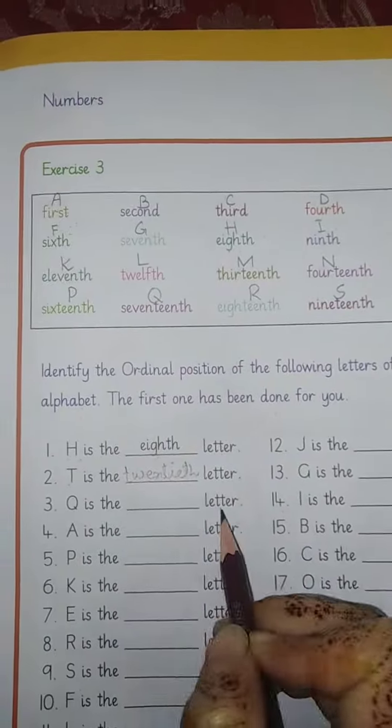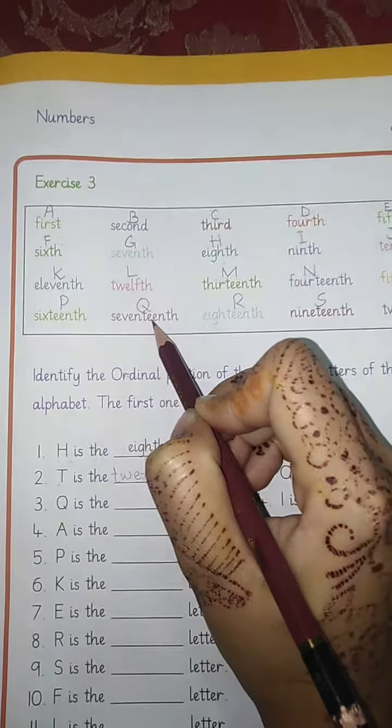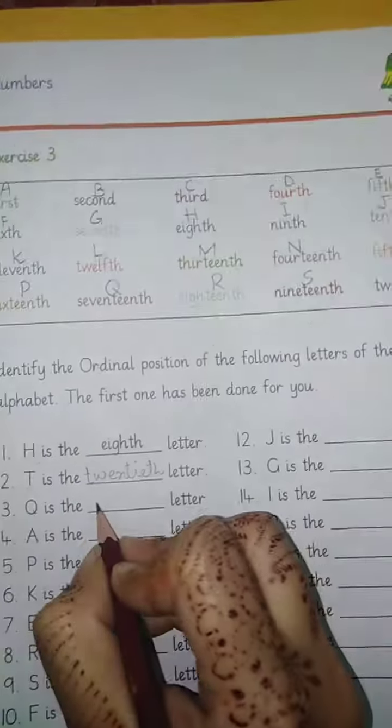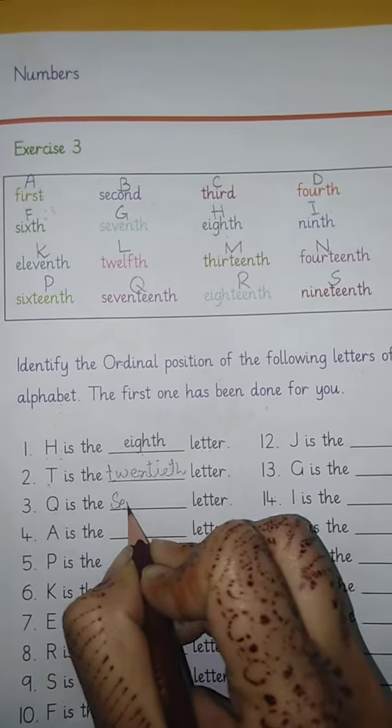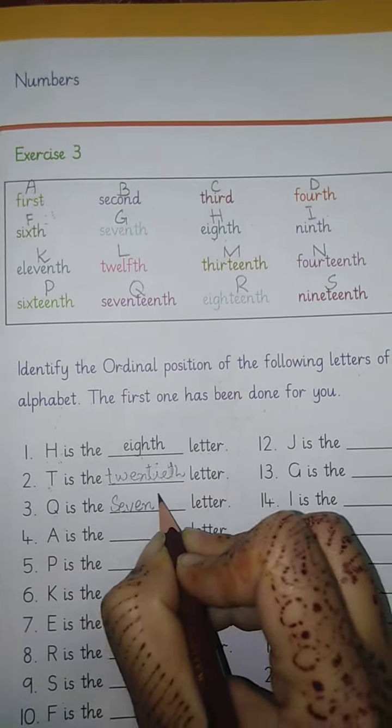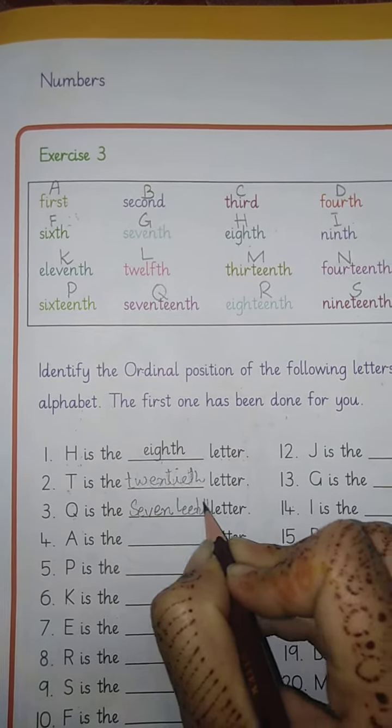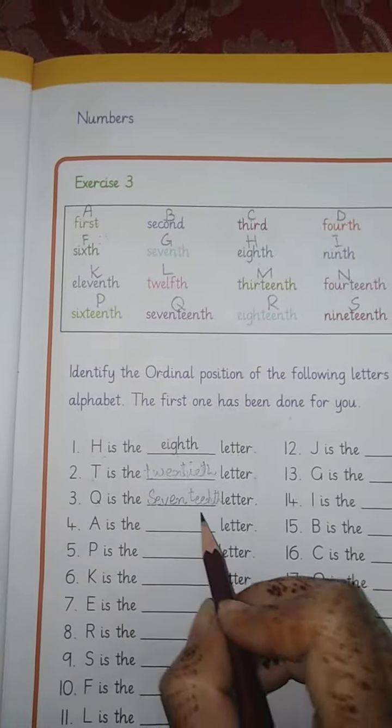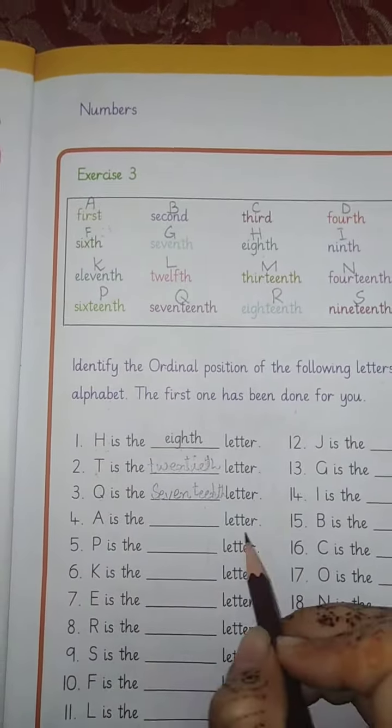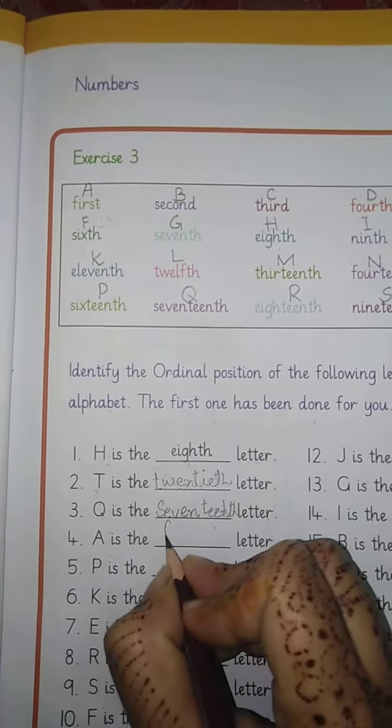Q is the dash letter. Q is which ordinal position? 17th. Q is the 17th letter. A is the dash letter. A is the first letter.